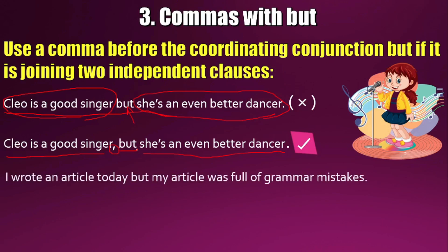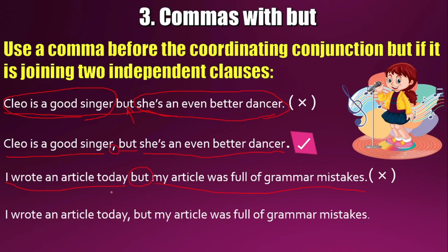Another example: 'I wrote an article today, but my article was full of grammar mistakes.' 'I wrote an article today' is an independent clause, and 'my article was full of grammar mistakes' is another. Without a comma before 'but,' the sentence is completely wrong. With a comma — 'I wrote an article today, but my article was full of grammar mistakes' — the statement is correct. Always place a comma before 'but' when joining two independent clauses.